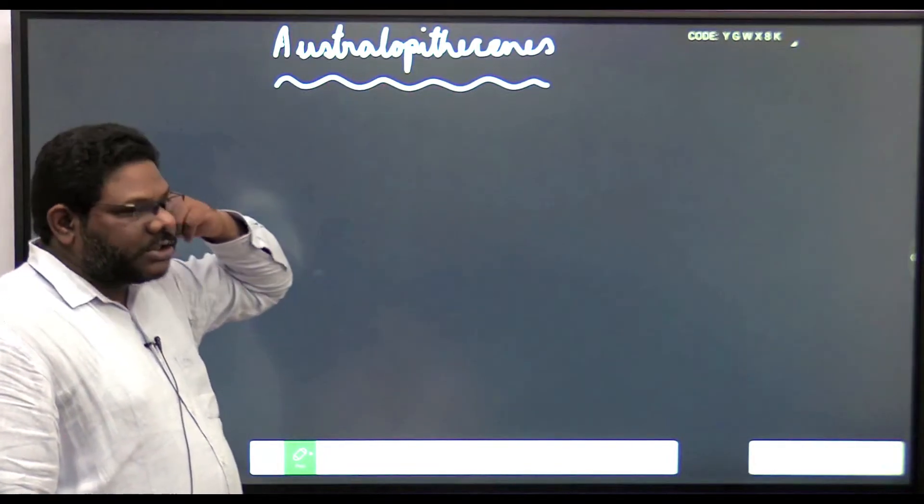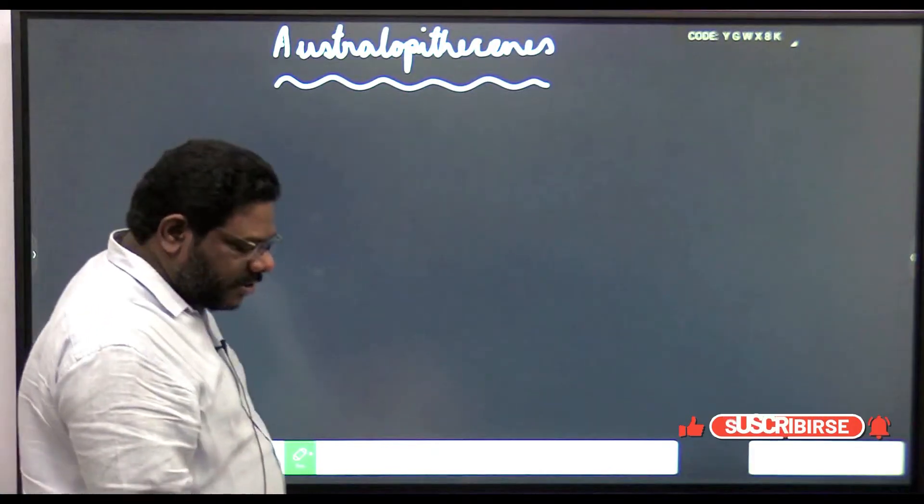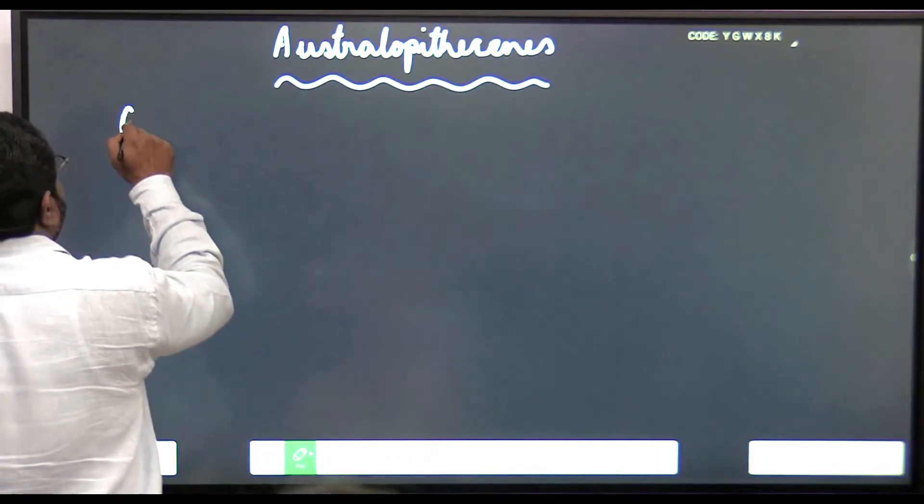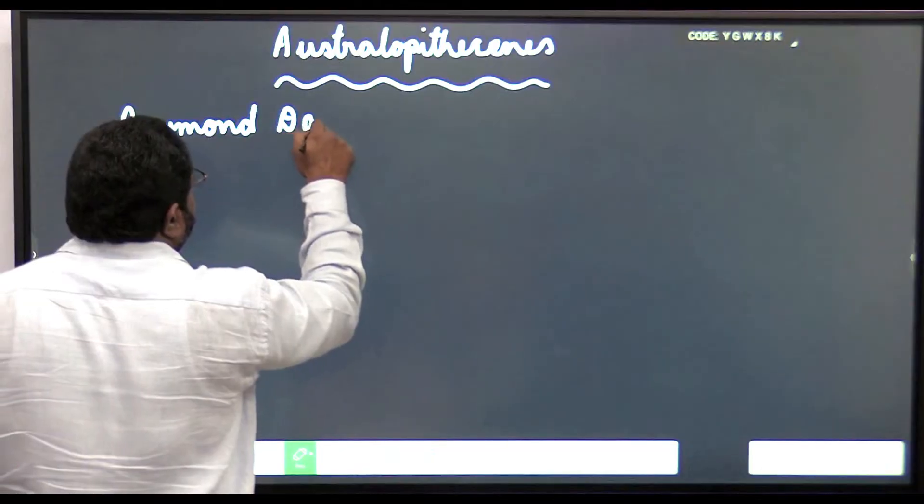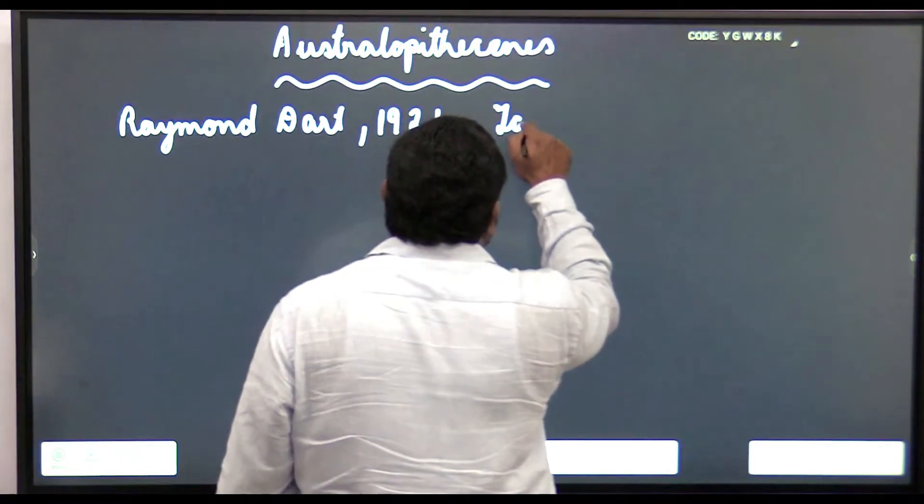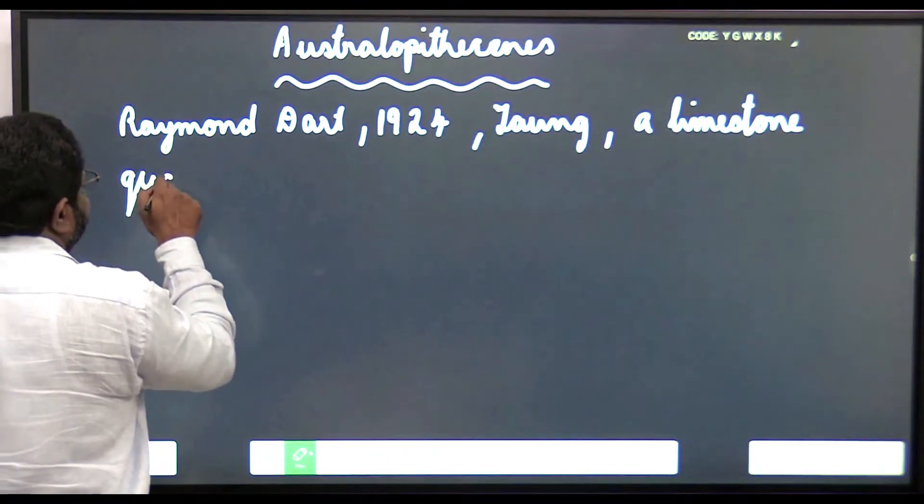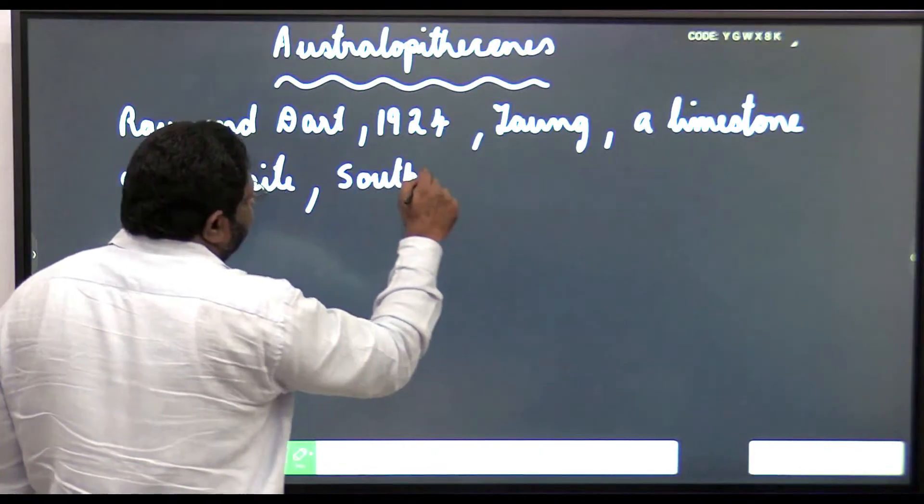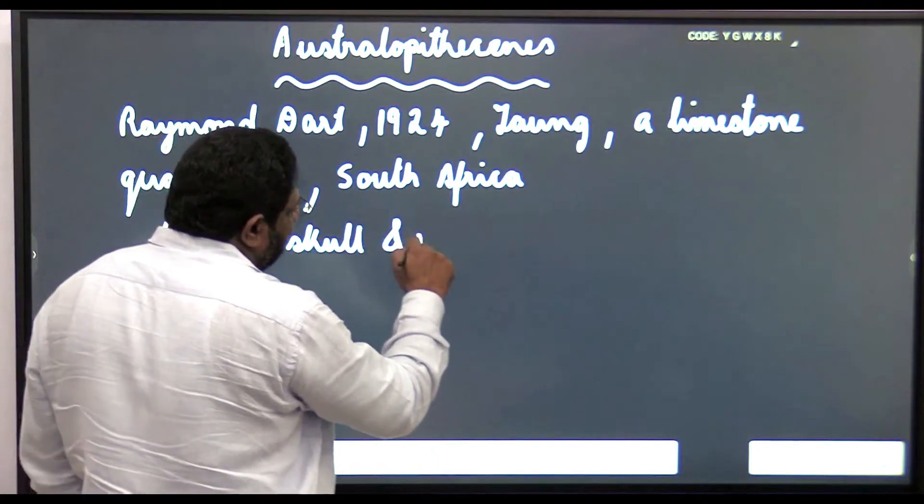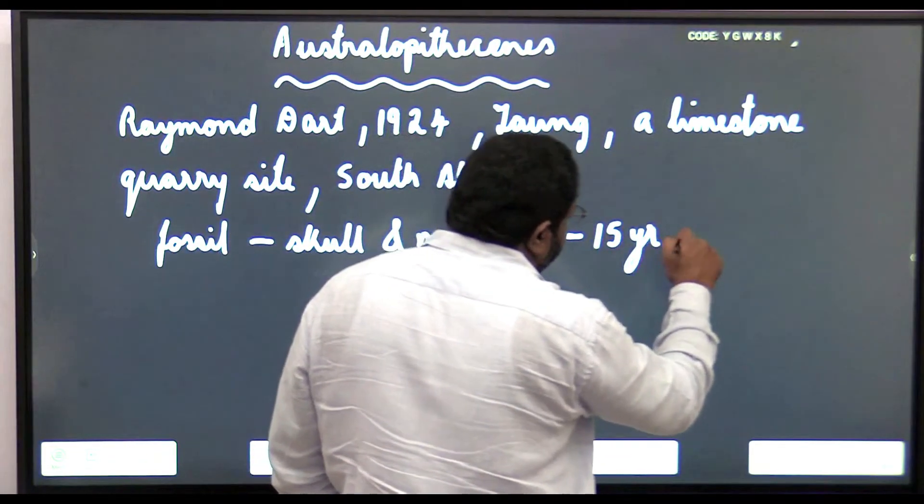Please write: the first fossil of Australopithecus was discovered by Raymond Dart in 1924 at a place known as Taung, a limestone quarry site in South Africa. The fossil consists of skull and mandible of a 15-year-old boy.